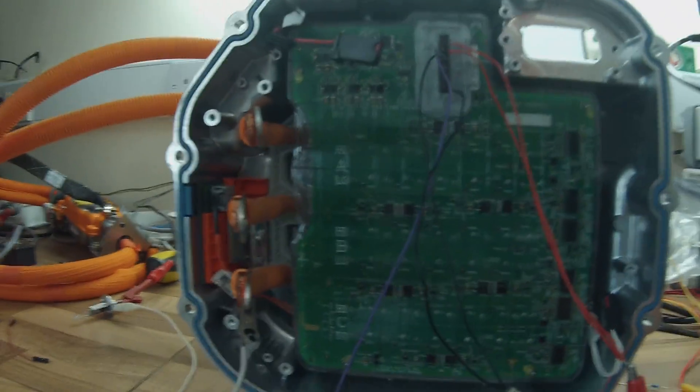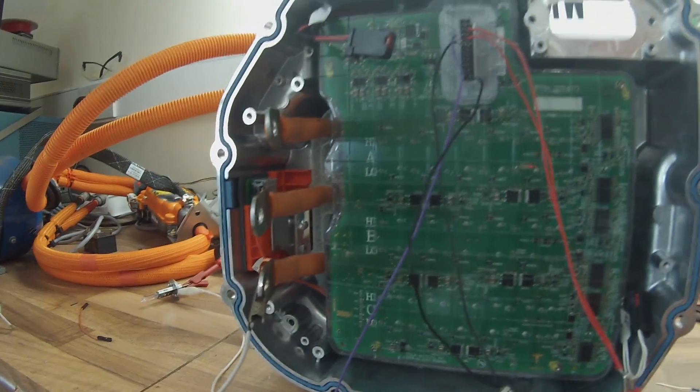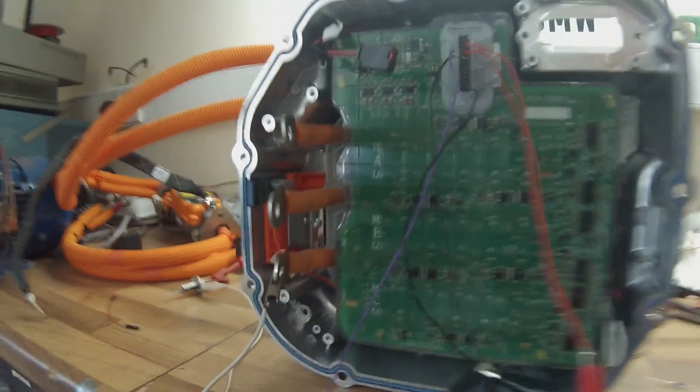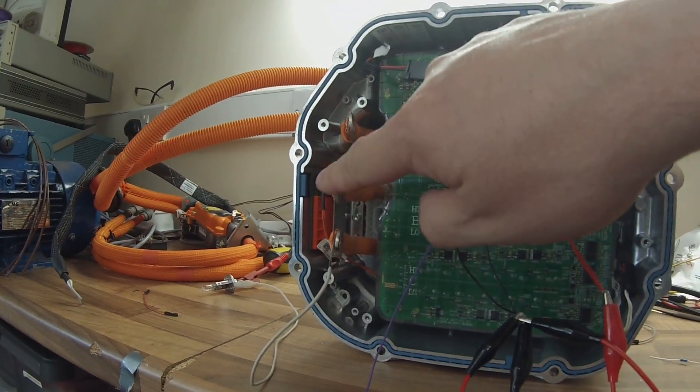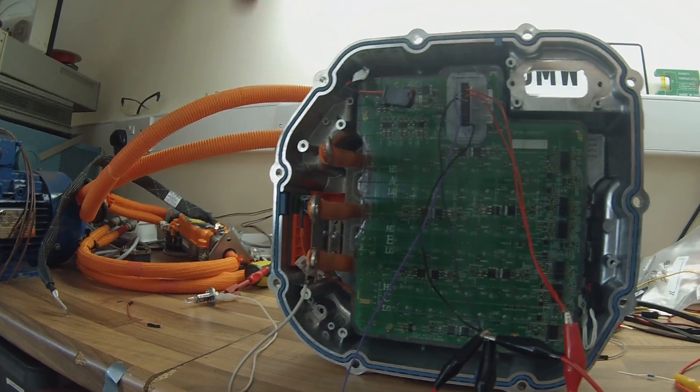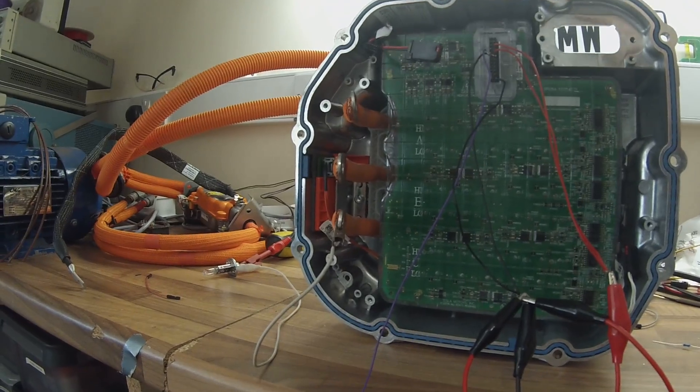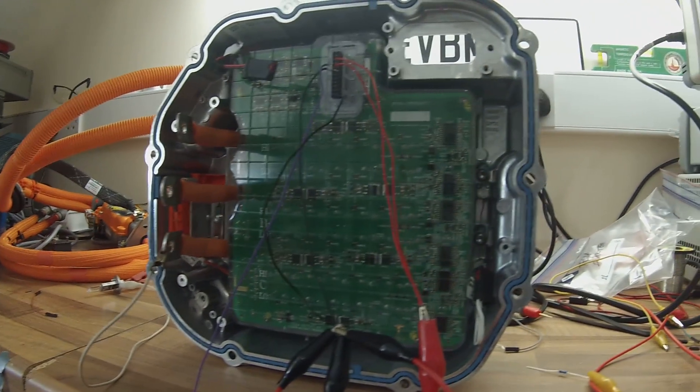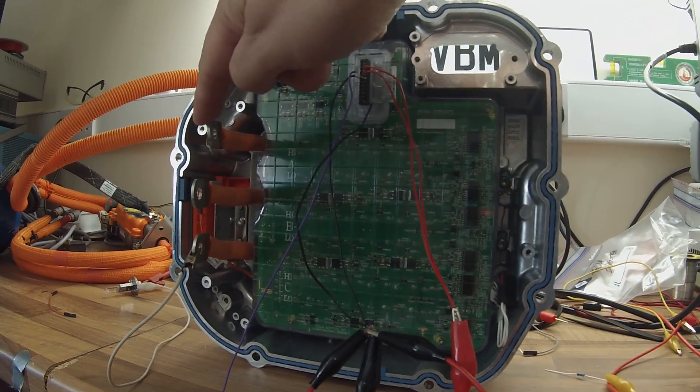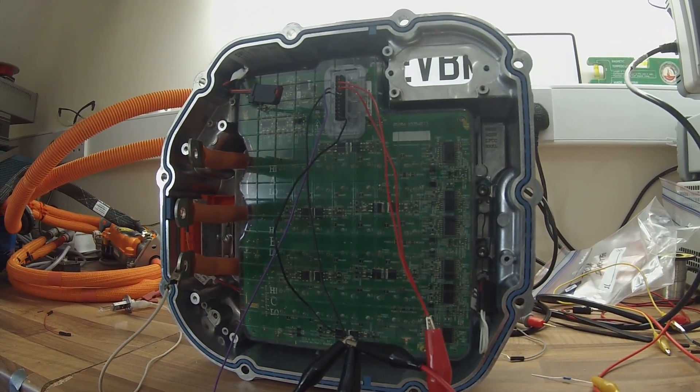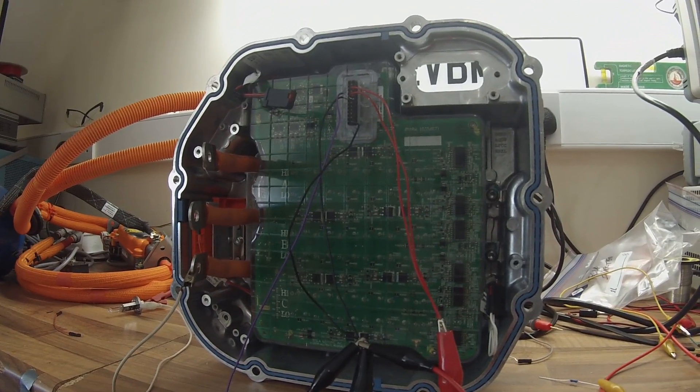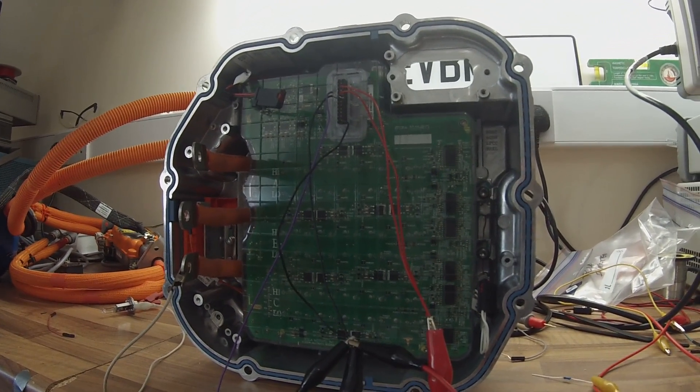Then it's just a case of repeating that for the three low sides and then swapping the power supply around to send the power in on the positive and come back out through the phase lines to identify the high side. So that's where we're at from an IGBT drive perspective.